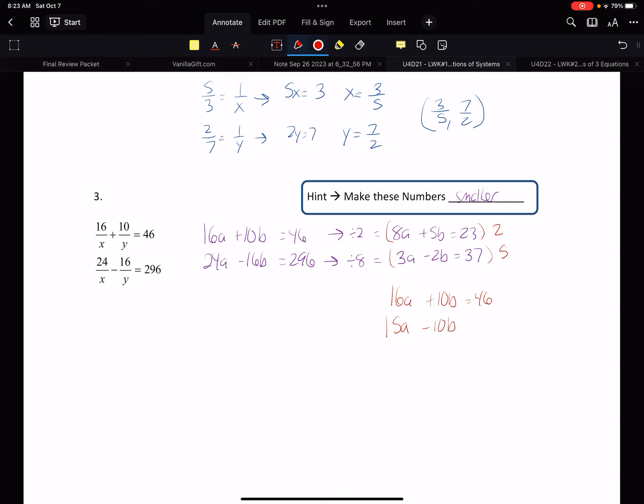15A minus 10B equals 185, which is 31A equals 231. A equals 231 over 31. Ew. Yikes. That's not the best thing to work with. So I don't want to do it that way. So double solve method.